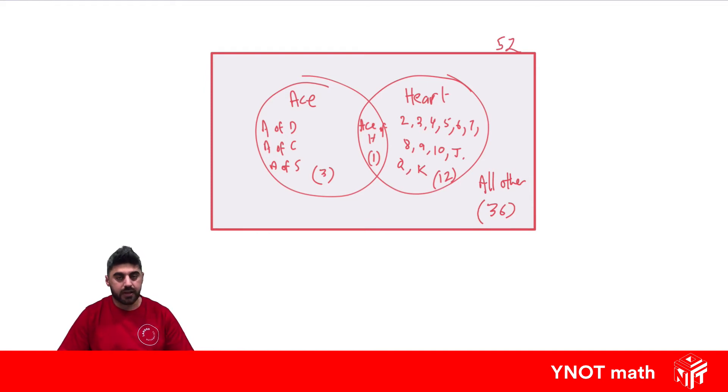And drawing a Venn diagram can make things really easy when we have overlapping categories, because now if I want to have the probability, what's the probability of getting an ace? Well, we look in the ace category, which is this entire circle, we know there's four out of the total of 52. So we have four out of 52, which can be simplified if we divide both of these by four, to get one out of 13.